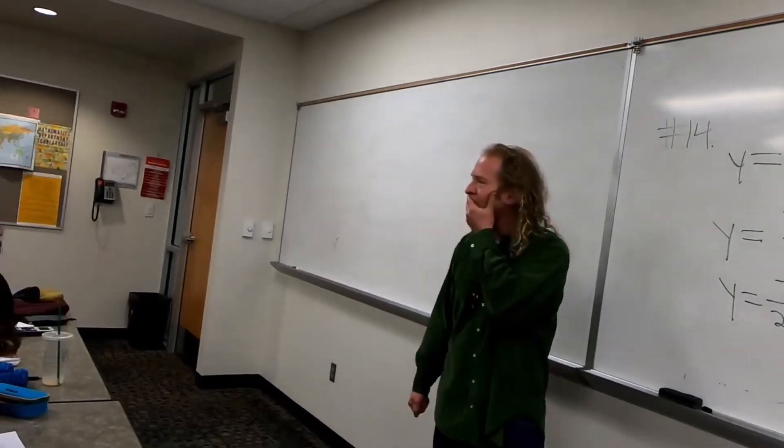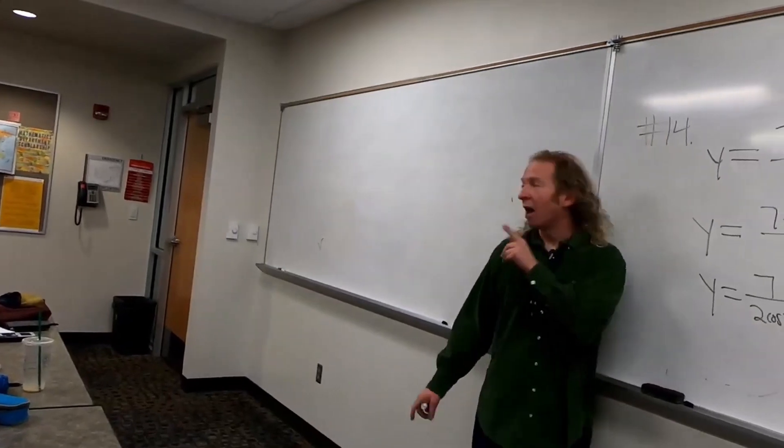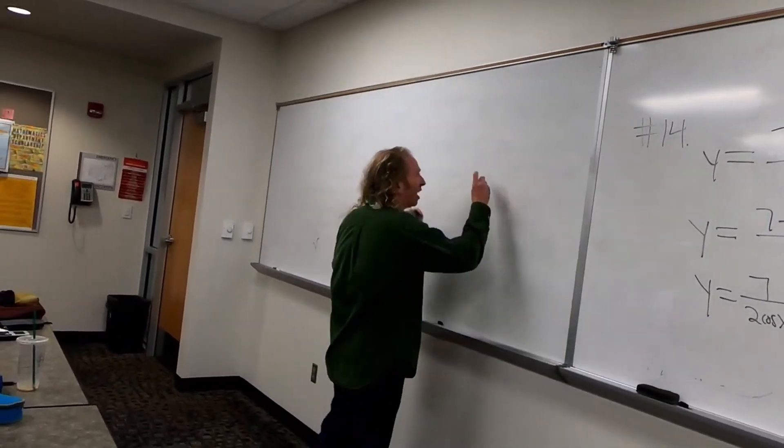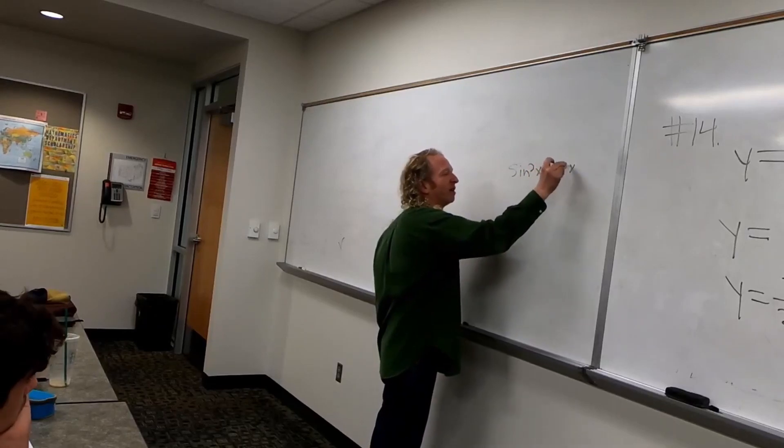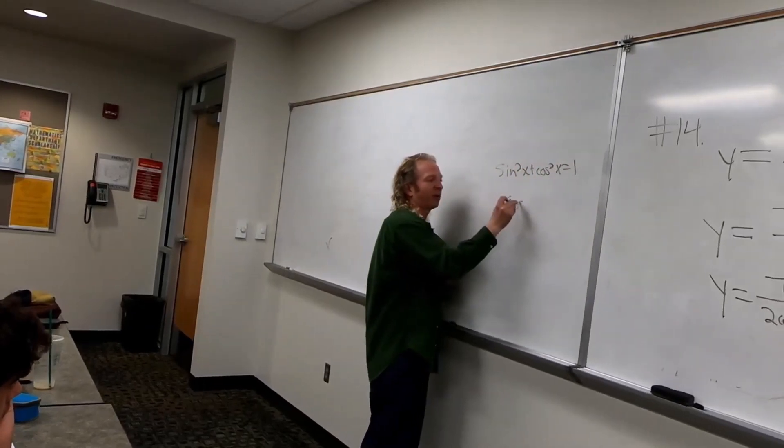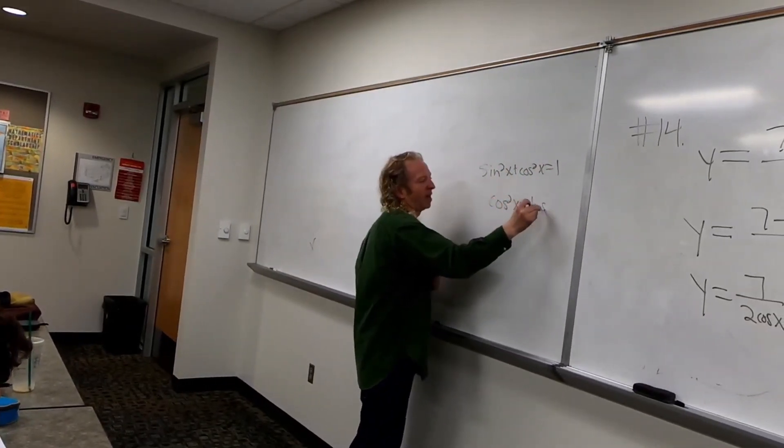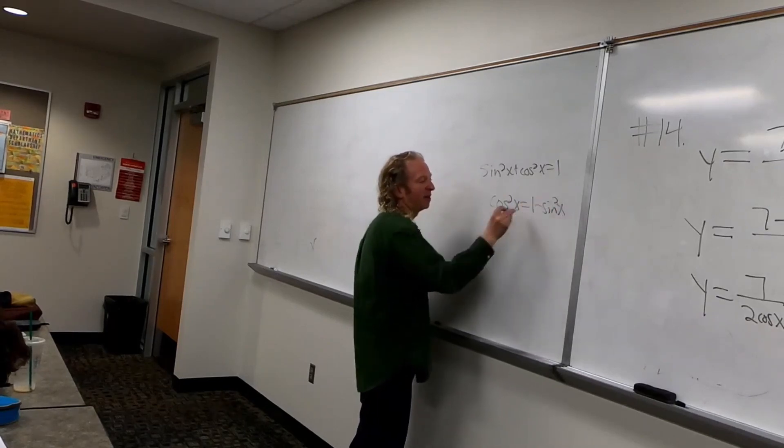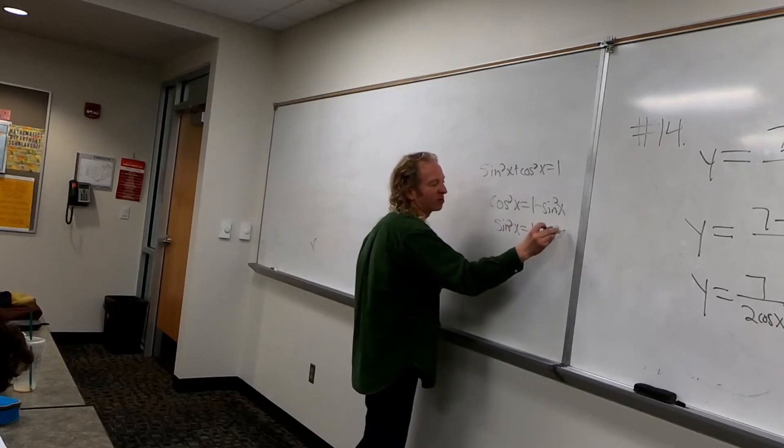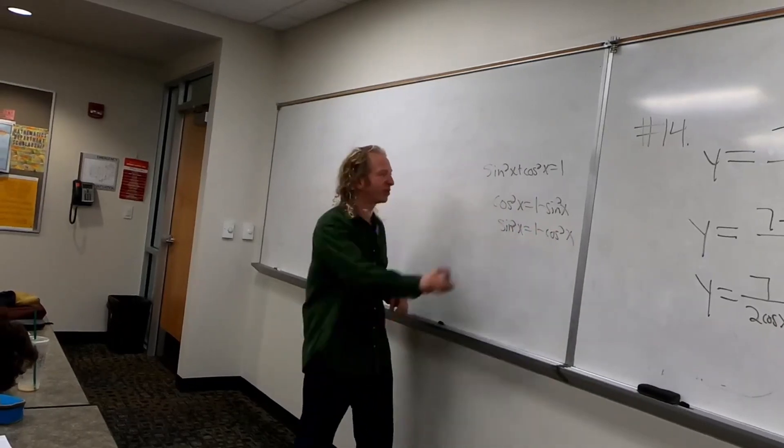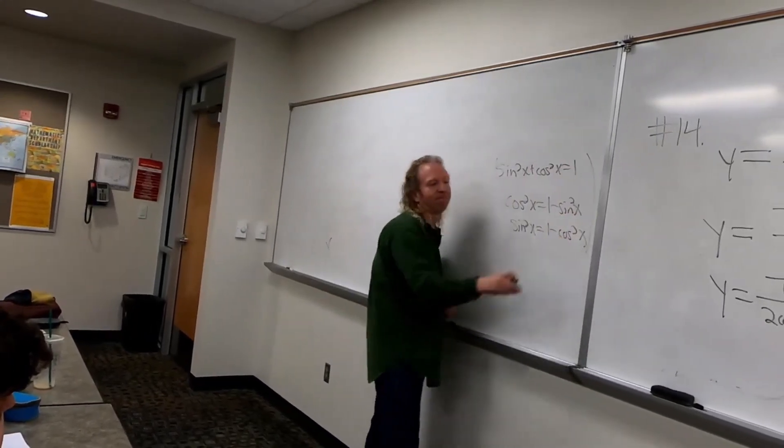I have a question. Isn't 1 minus sine x in here? Ah, I see, Reese. You're thinking of this one. Sine squared plus cosine squared is 1. So cosine squared is... And then also sine squared. So each of them is 1 minus the other one squared. Good question, Reese. Good. It's good.